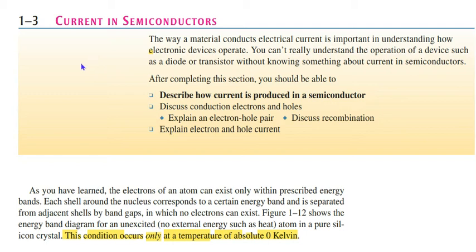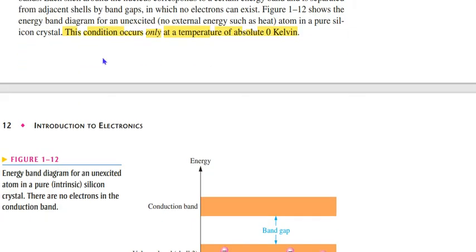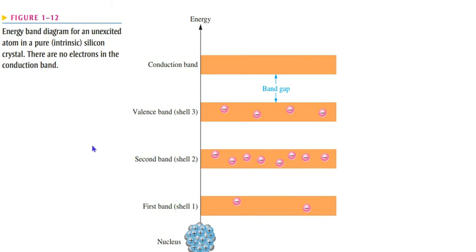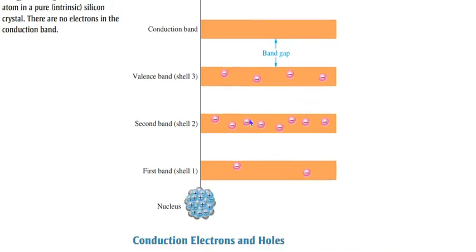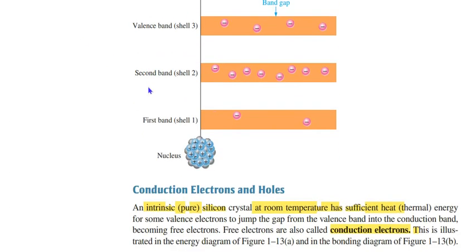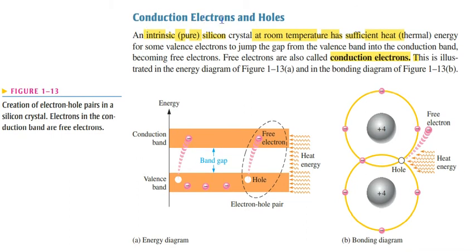The next point is current in the semiconductor, Chapter 1. At 0 Kelvin, the silicon semiconductor becomes an insulator. The valence electrons jump back to the valence band, the conduction band is completely empty, and the valence band is completely filled with valence electrons, so the semiconductor acts as an insulator.